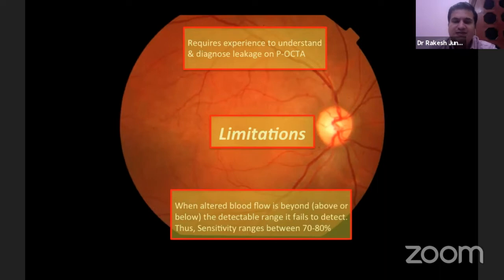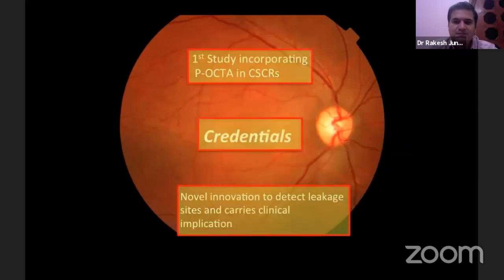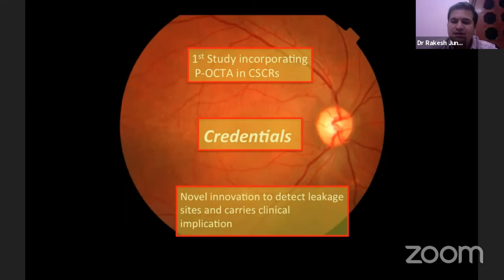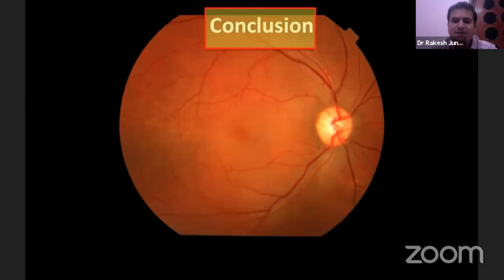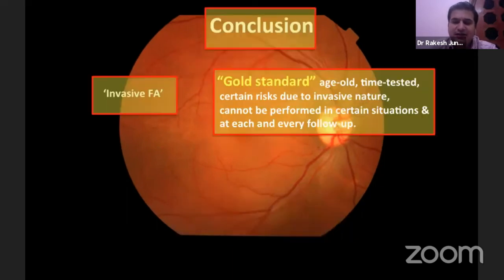The sensitivity range is still around 70 to 80 percent. To our credentials, this was the first study of its kind to incorporate panoramic OCT angio in CSR — a novel innovative way to detect the leakage and the site, carrying the clinical implication that it provides landmarks for future focal laser treatment on the very same plane.